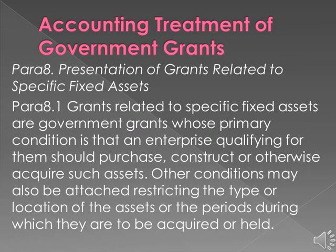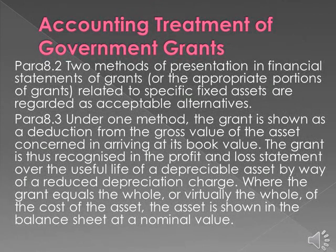Para 8: Presentation of Grants Related to Specific Fixed Assets. Para 8.1: Grants related to specific fixed assets are government grants whose primary condition is that an enterprise qualifying for them should purchase, construct, or otherwise acquire such assets. Other conditions may also be attached restricting the type or location of the assets or the periods during which they are to be acquired or held. Para 8.2: Two methods of presentation are regarded as acceptable alternatives. Para 8.3: Under one method, the grant is shown as a deduction from the gross value of the asset concerned in arriving at its book value. The grant is thus recognized in the profit and loss statement over the useful life of a depreciable asset by way of a reduced depreciation charge. Where the grant equals the whole or virtually the whole of the cost of the asset, the asset is shown in the balance sheet at a nominal value.